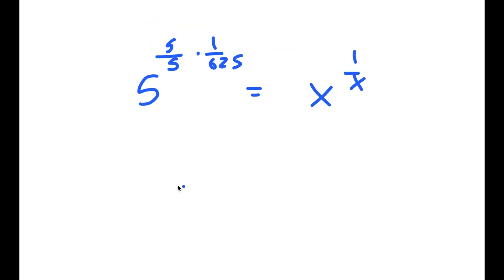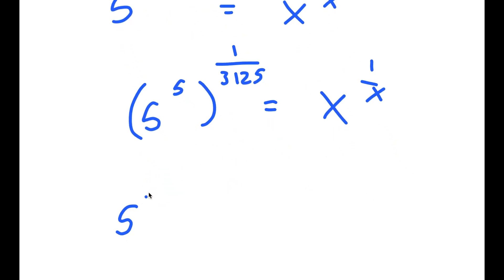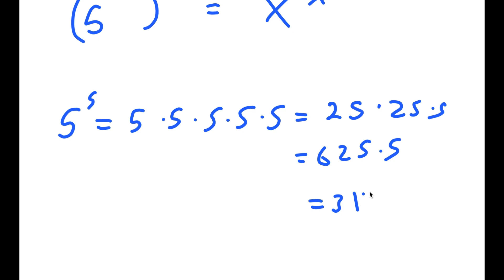So now I get 5 to the power of 5, to the power of 1 over 3125, is equal to x to the power of 1 over x. Now, 5 to the power of 5 is equal to 5 times 5 times 5 times 5 times 5, which is equal to 625 times 5, which is equal to 3125.